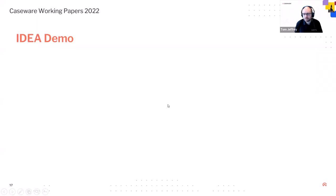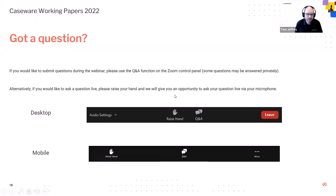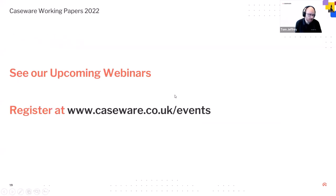There we are — a quite comprehensive overview of the IDEA platform and its integration with Working Papers, and where you can find it in the new version of Working Papers. As James said in his recording, if you have any questions or queries about the platform you can submit them here and we'll forward them to the relevant contact. If you want to discuss acquiring IDEA, speak with your account manager. We do have a couple of questions that have come in — we'll just quickly cover those off.